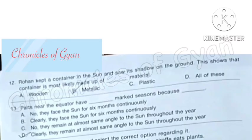Question 12: Rohan kept a container in the sun and saw its shadow on the ground. This shows that container is most likely made up of dash material. So it can be wooden, it can be metallic and it can be plastic also. So correct answer is option D: All of these.